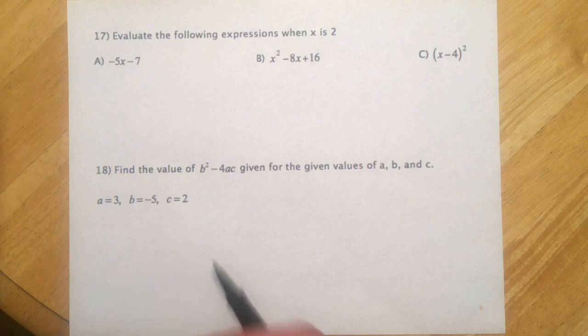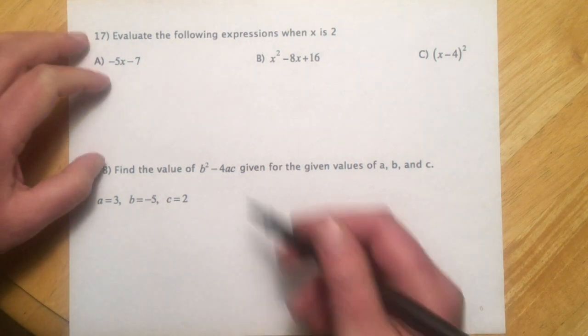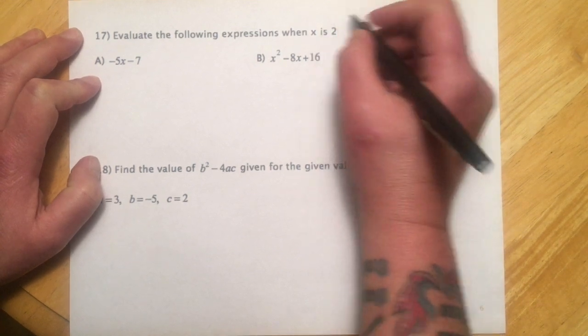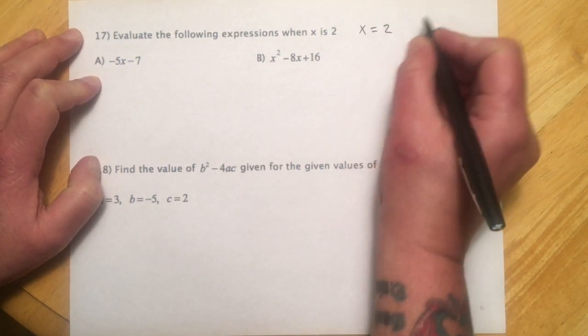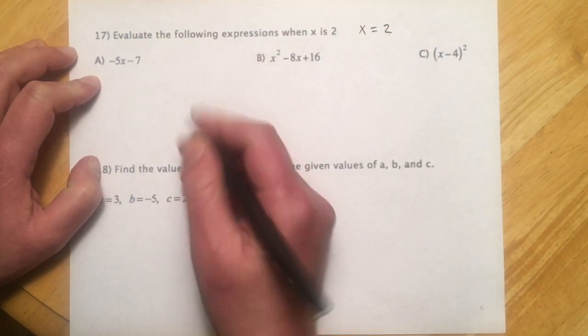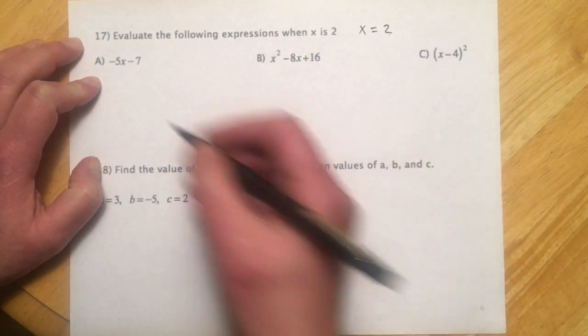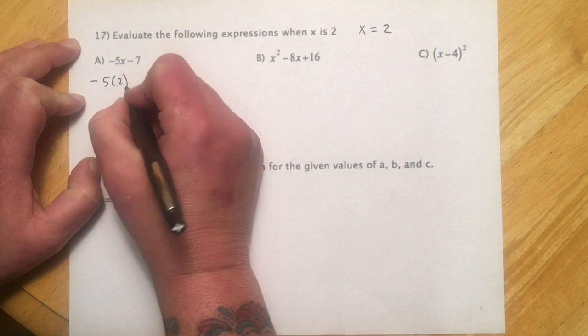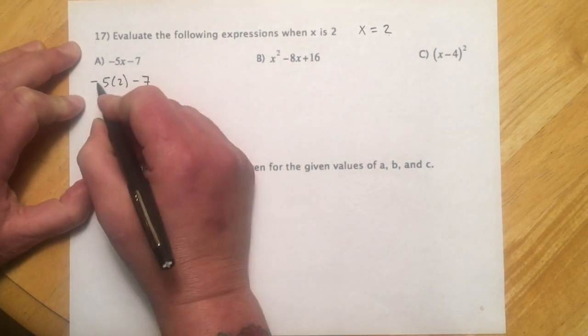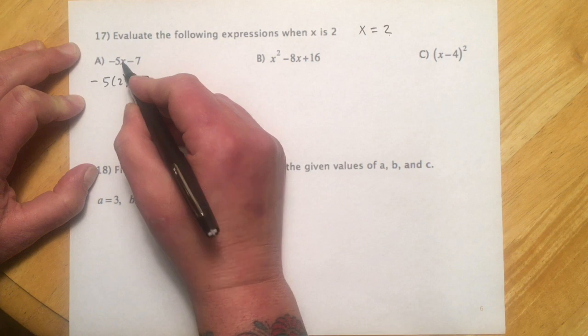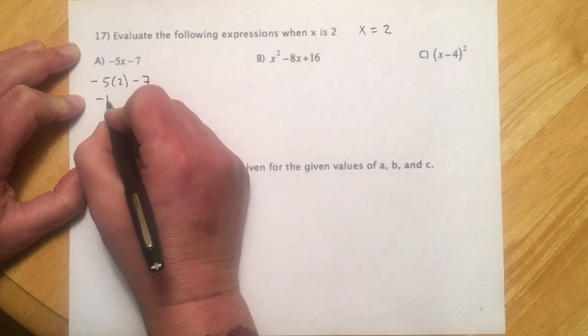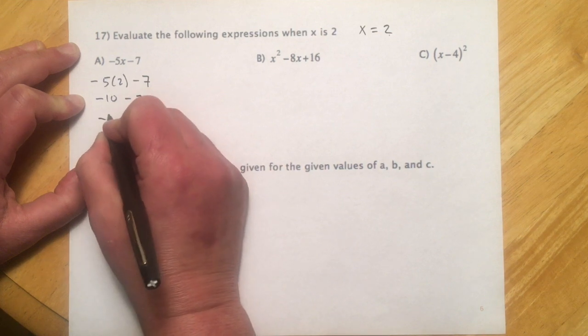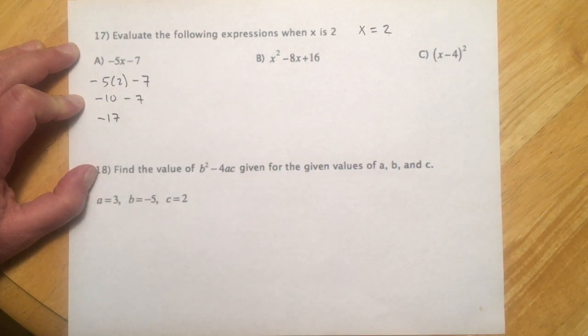These last few examples are evaluating expressions. So evaluate the following expressions when x is 2. So they're just saying, let x equal 2. And we're just going to take that and plug it in for the x and see what happens. And so it's going to make an expression kind of similar to the ones we're working on in the beginning of the section. So here we're just going to go. So I'm just taking the 2, putting it in for that x. I got negative 10 minus 7. So down 10, down another 7. I should get negative 17.